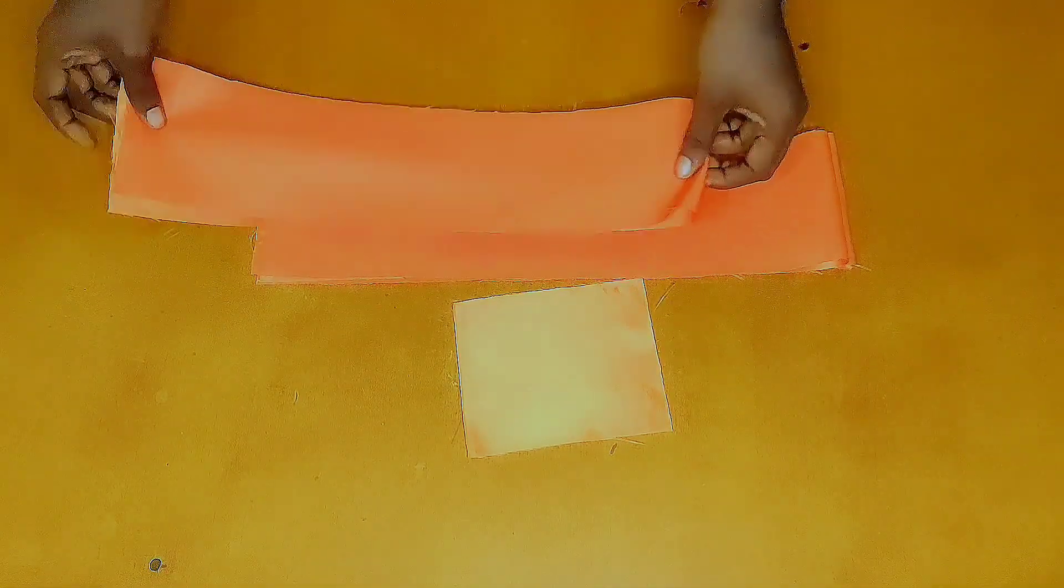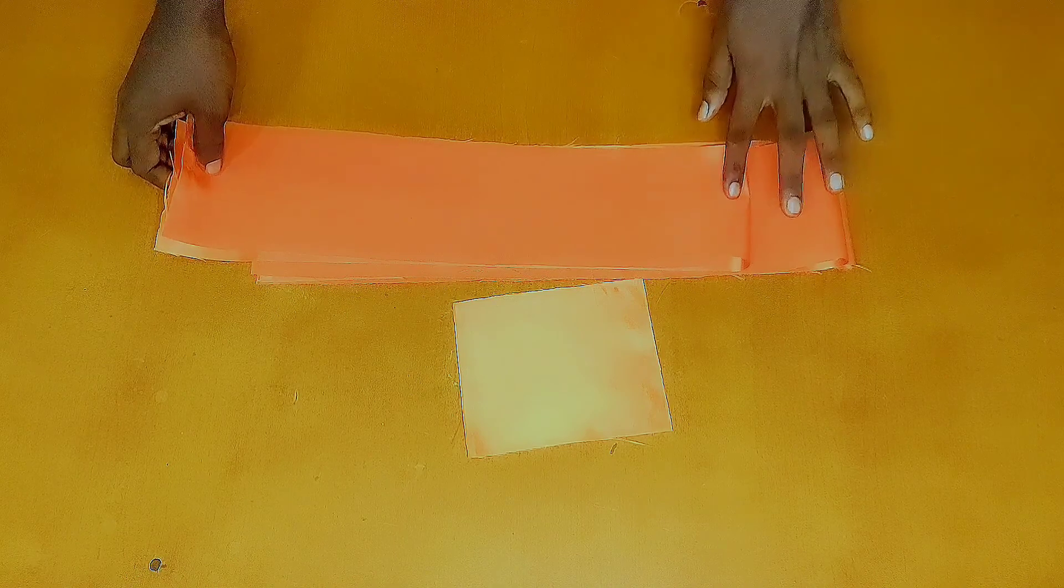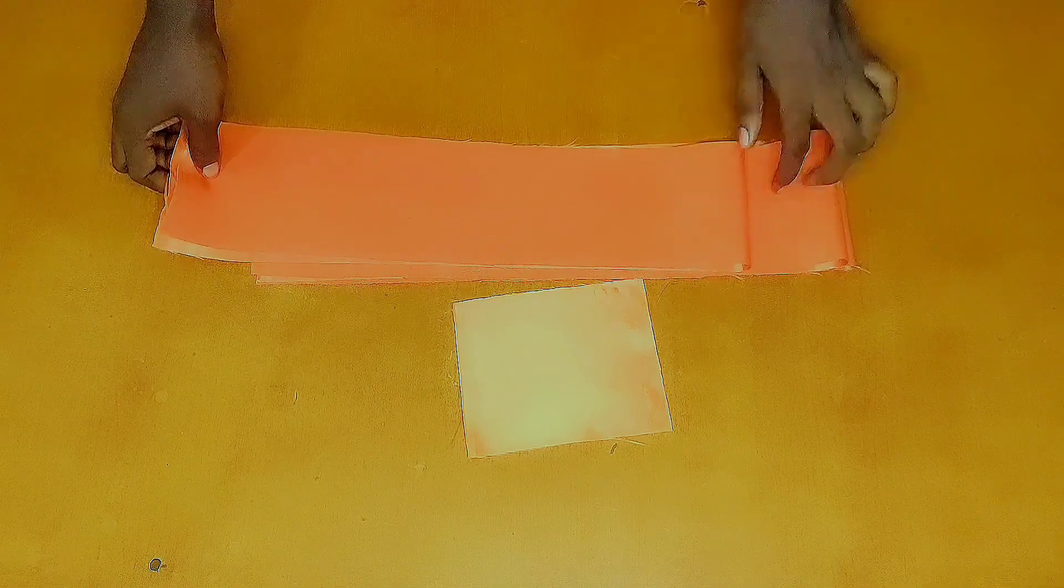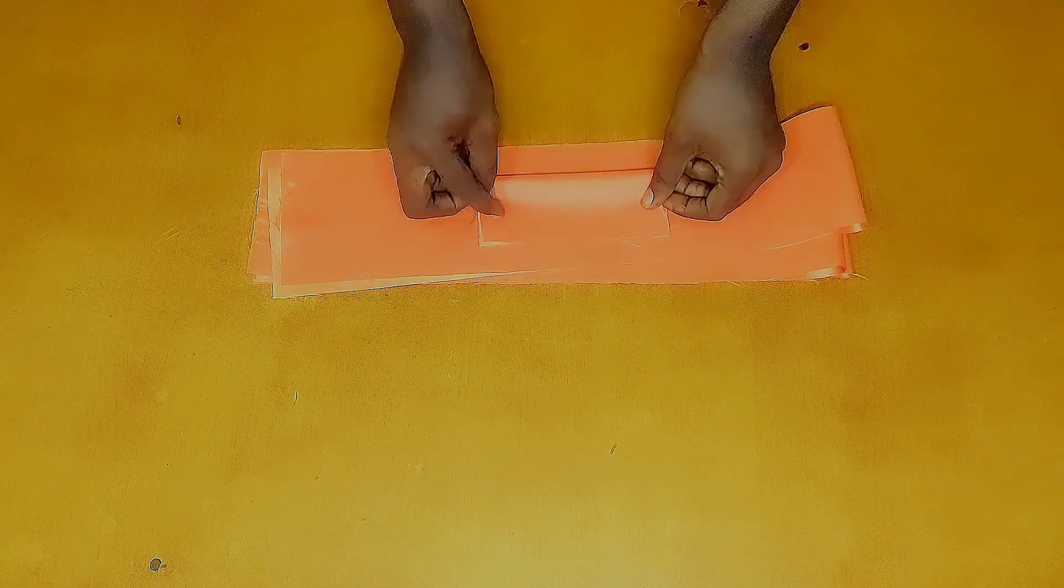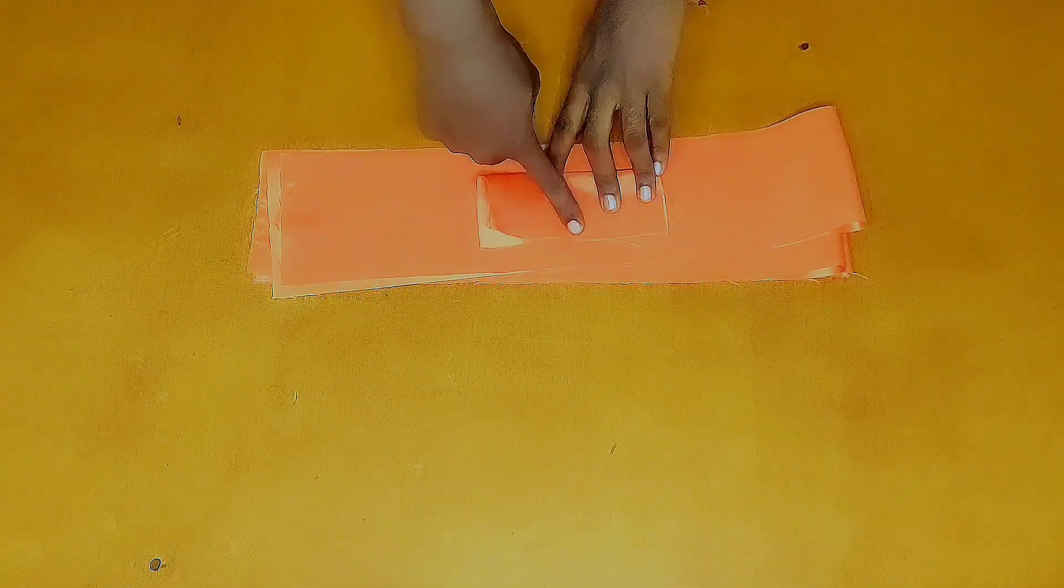Whatever I do to the first piece, I will do the same thing to the remaining 2 pieces. For the smaller piece of the fabric, I will also fold it into 2 and stitch it together by half an inch.